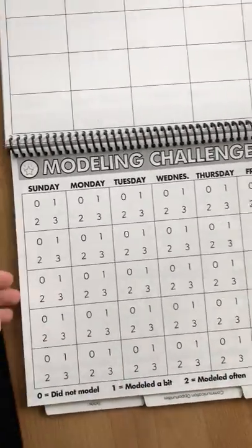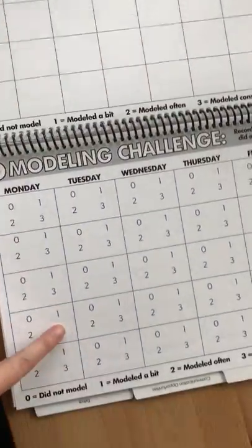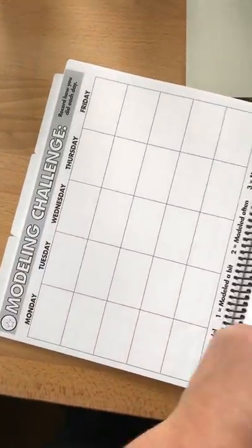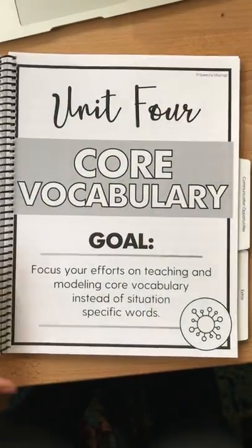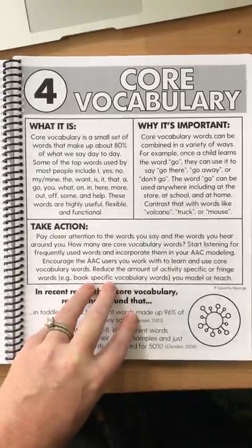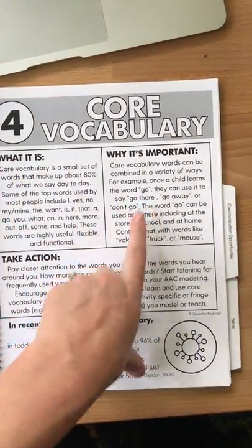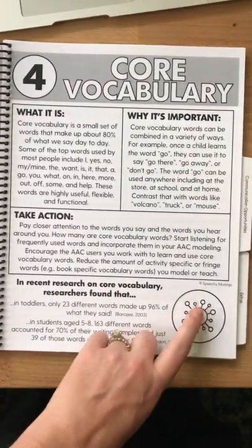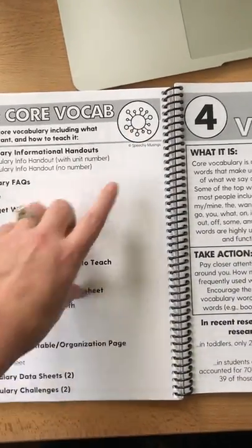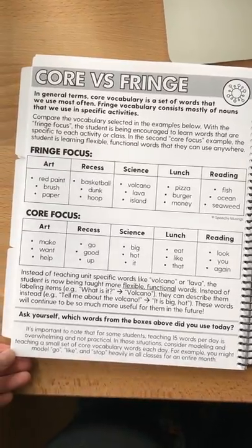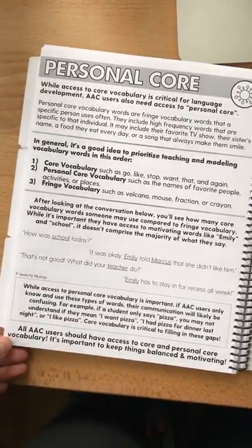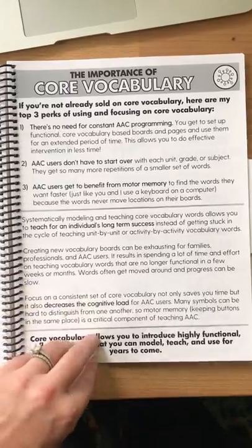Modeling challenges let you record time spent modeling each day of the week, with versions that include weekends and ones with a rating scale: did not model, modeled a bit, modeled often, or modeled consistently — for a whole month on a Monday-through-Friday school schedule. The next section is core vocabulary, focused on core instead of situation-specific words. It follows the same layout — a numbered handout covering what it is, why it's important, and how to take action, with research cited at the bottom.